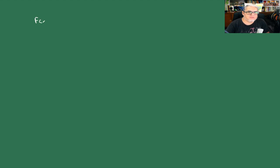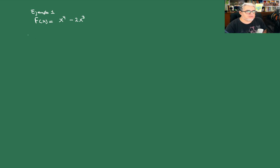El ejemplo es f(x) = x⁴ - 2x³. Entonces lo primero es ver dónde cruza con el eje x.